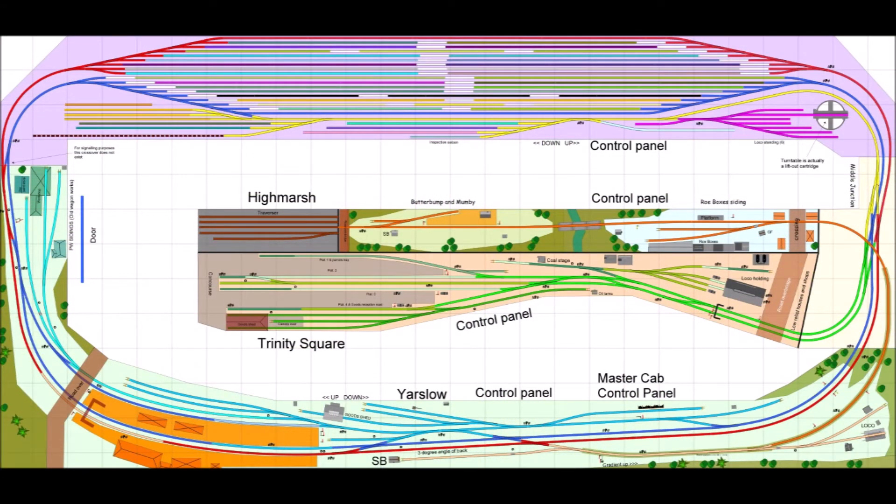The storage area on the Yarslow layout is an important part of it. The layout itself is a one-man, single-handed operation. I'm normally going to be sitting in the bottom right-hand corner in front of Yarslow. Therefore, I need to be able to control the storage sidings from there.